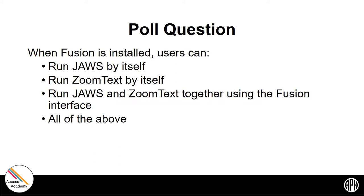The follow-up question: would that mean they should just use JAWS, or would they want both? If magnification helps, definitely try Fusion. With the keyboard, they can control both the screen reader portion and the magnification. The demonstration will show more of that shortly.